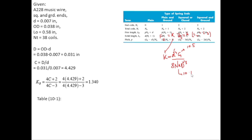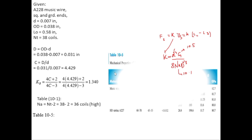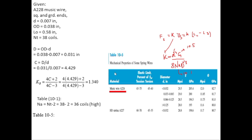From table 10.1 for a squared-and-ground spring, NT = NA + 2, so NA = NT − 2 = 30 − 2 = 28. Note that NA should be between 4 and 15, but here it is 28, which is a high value. From table 10.5, since the material is music wire and d = 0.007 inches is less than 0.032 inches, G = 12 Mpsi.